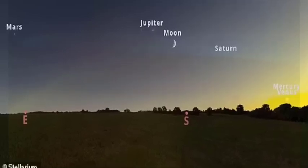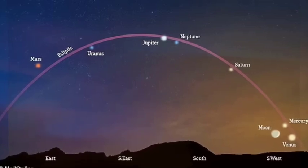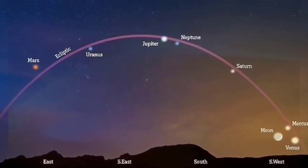Stargazers have been capturing some spectacular images of a rare astronomical event that means every planet in the solar system is visible in the night sky at the same time.